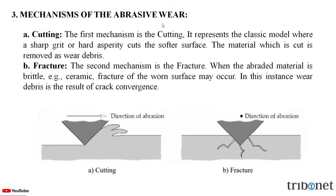What are the mechanisms of abrasive wear? The first one is cutting. This is the first mechanism, which represents the classic model where a sharp grit or a hard asperity cuts the softer surface. The material which is cut is removed as wear debris, and this is shown in figure A.